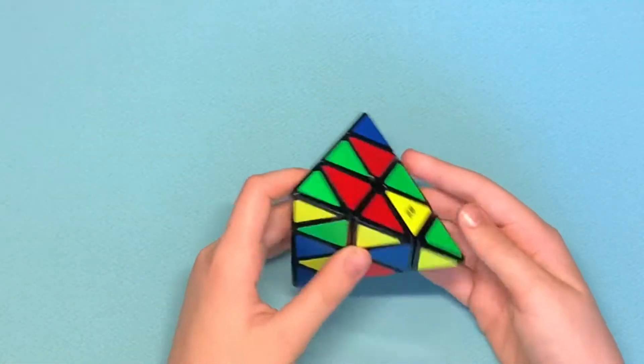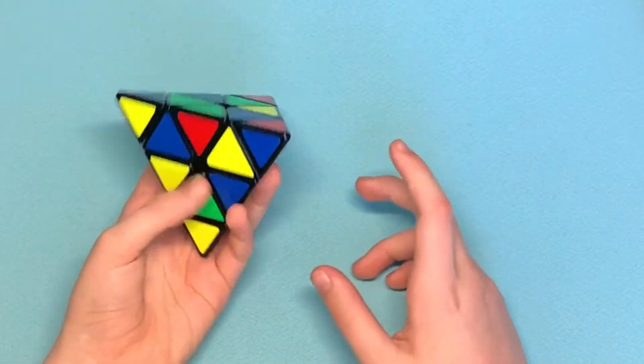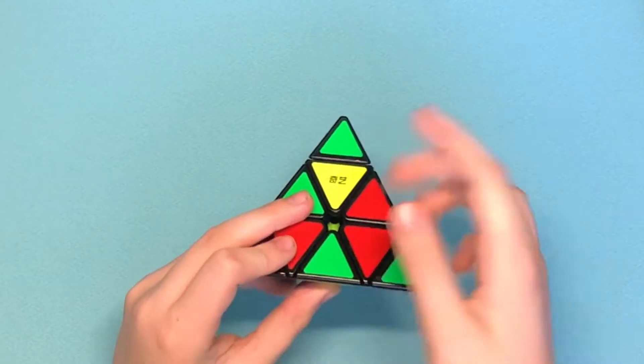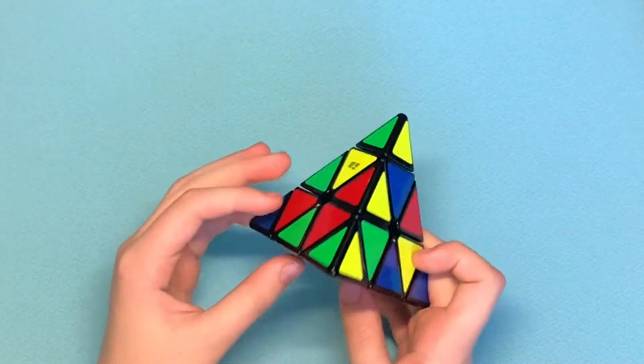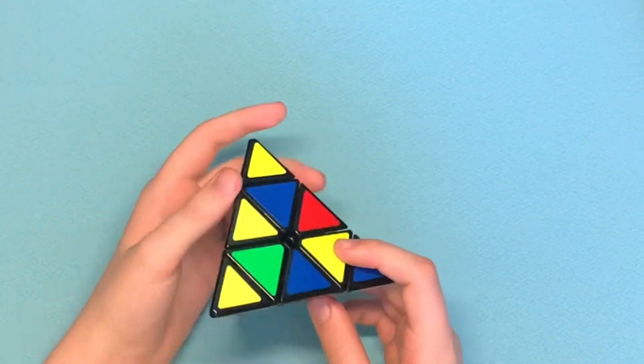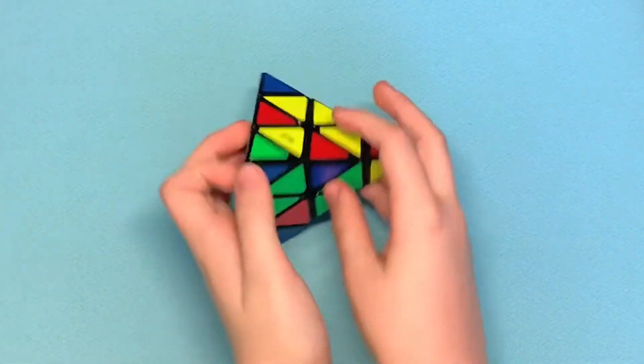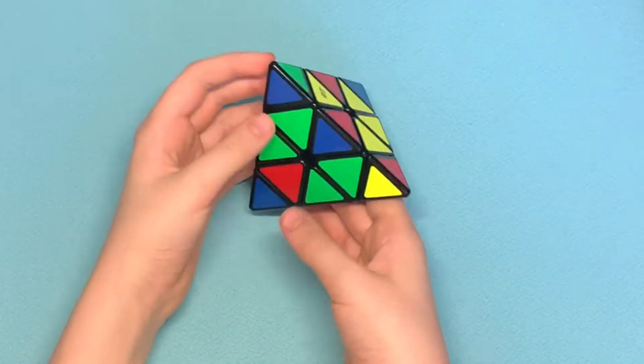But anyways, let's get started. All right, so look at this. I found a yellow center. So what we want to do is we want to get all three of them lined up in the same position. So I'm going to turn these, and voila! We got it all in the same position.